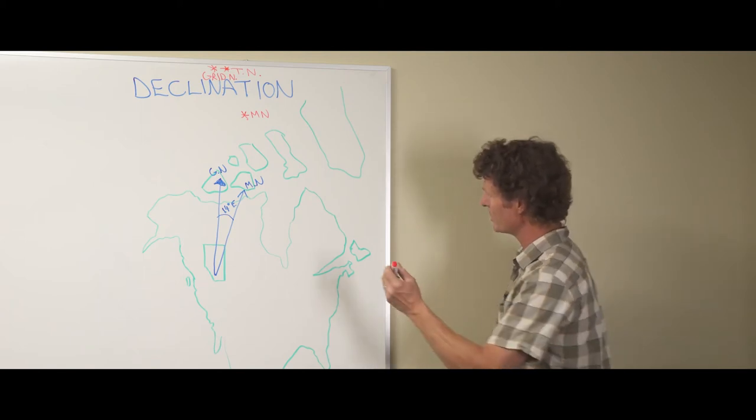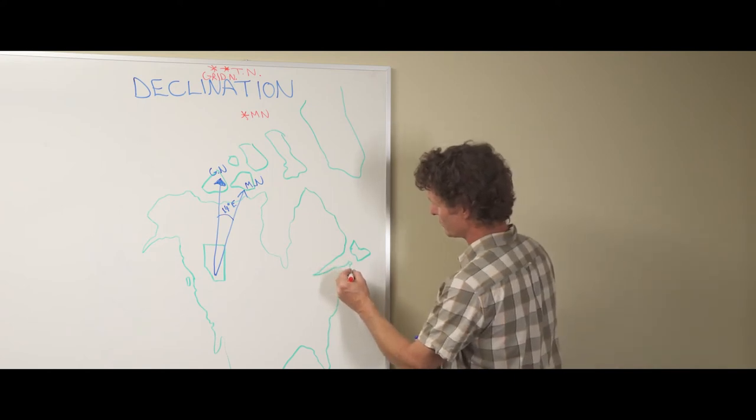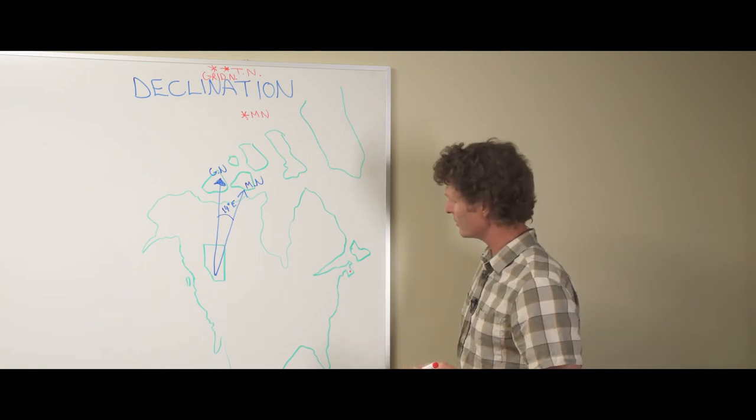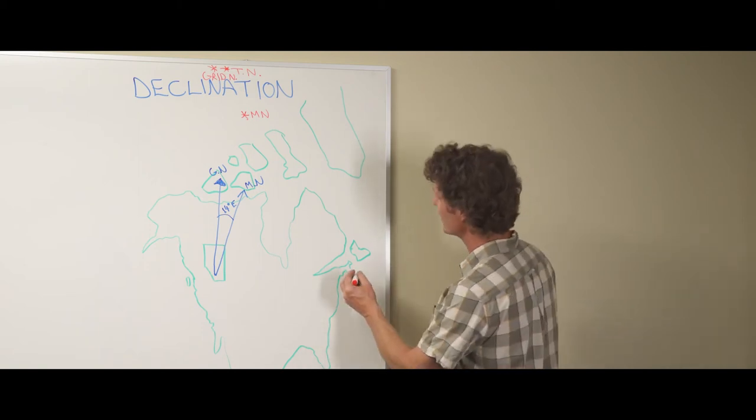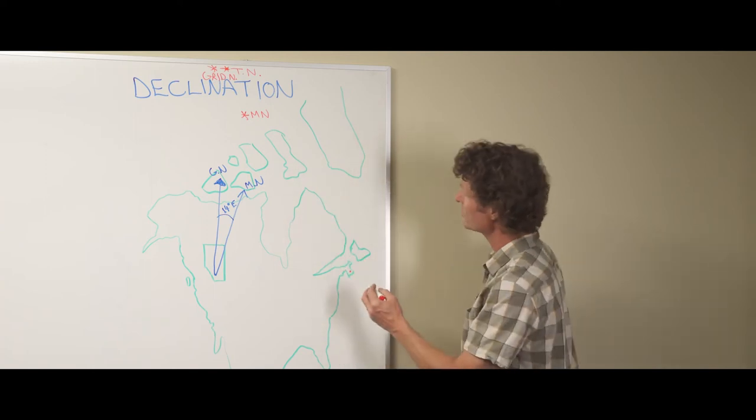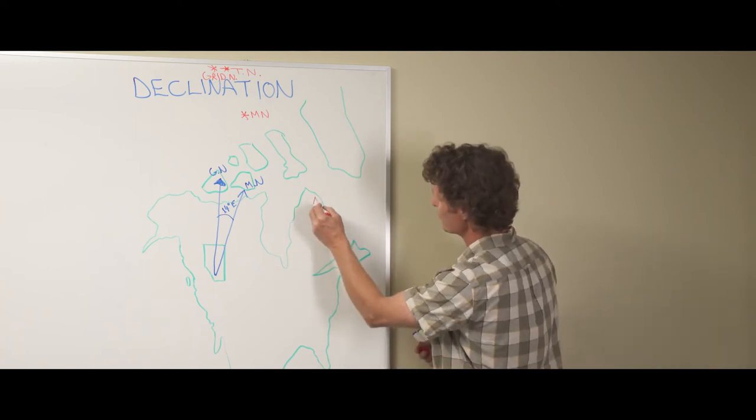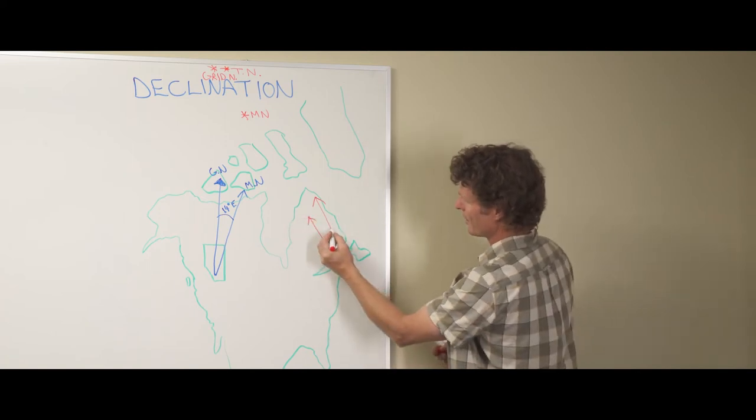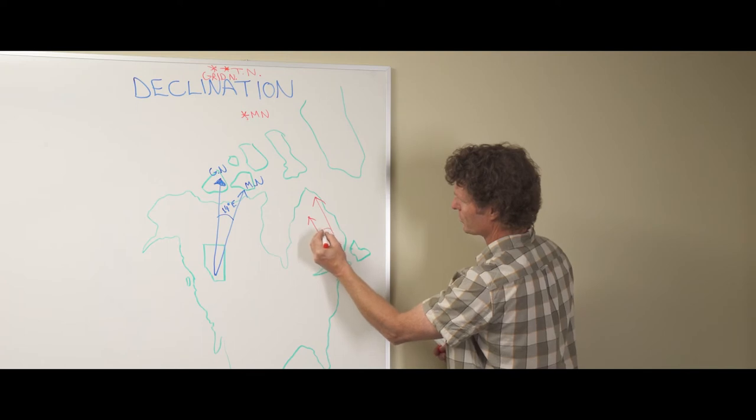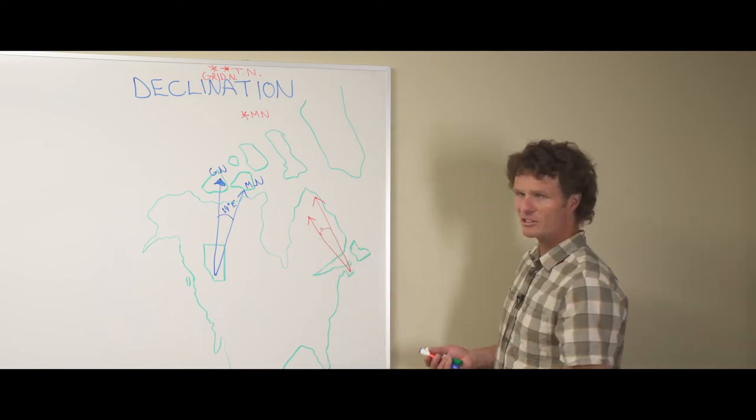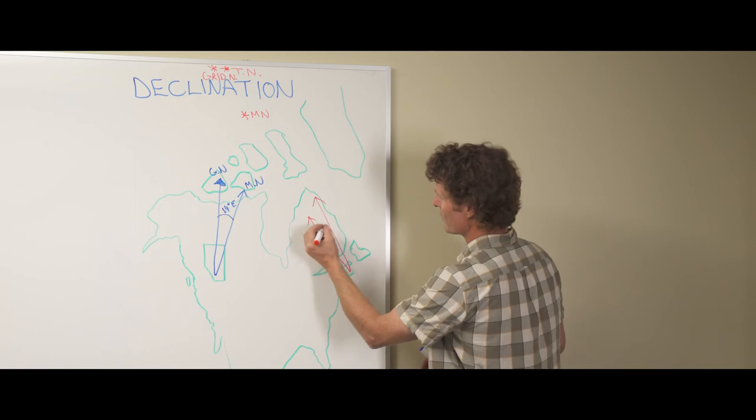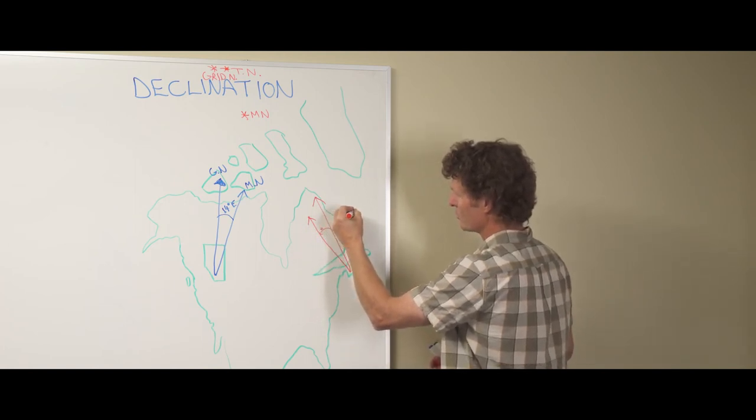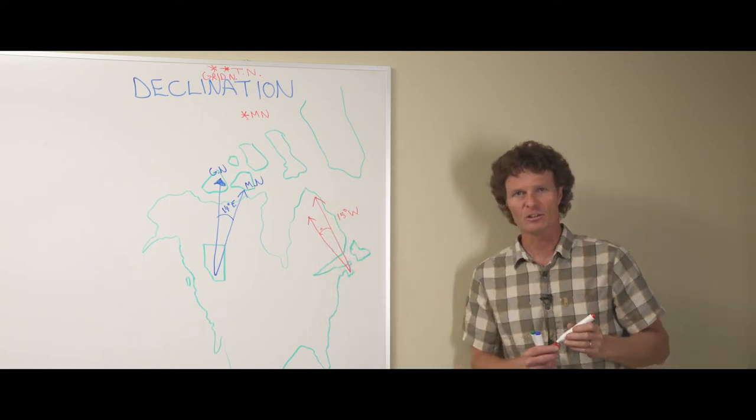Let's say we are out here in Nova Scotia. So we're enjoying some lobster over there on a pub in Halifax, and we want to know what our declination is. We're going to look at the angle to grid north, the angle to magnetic north, and the difference between the two, and this time we're going to have the opposite. So we're actually going to have a westerly declination, and let's say it's 15 degrees west. So it's the opposite.